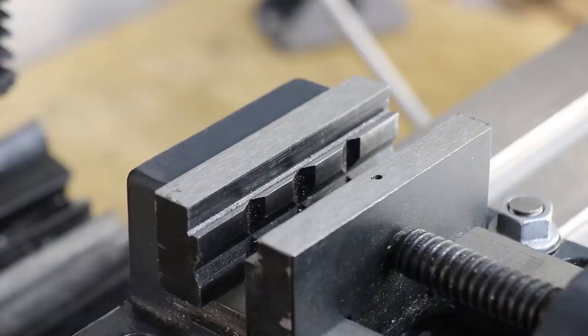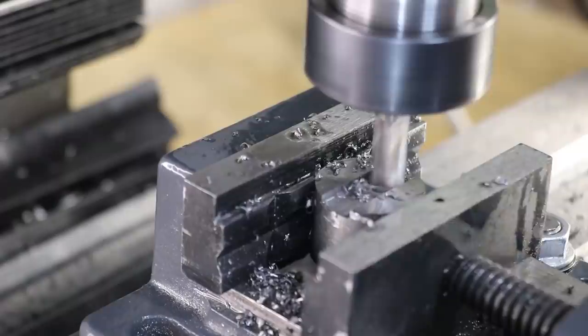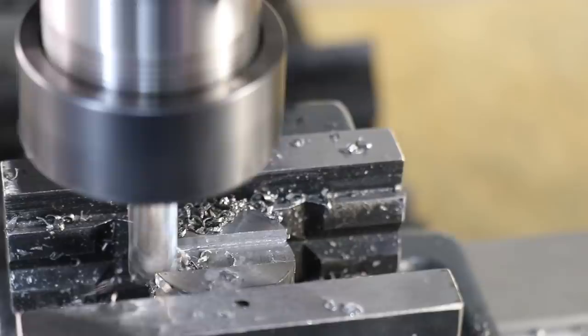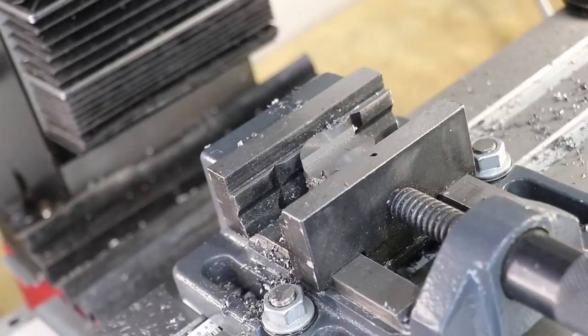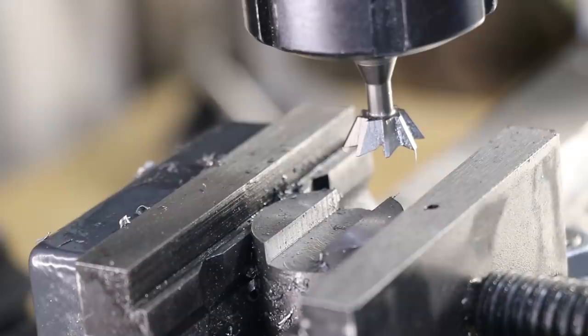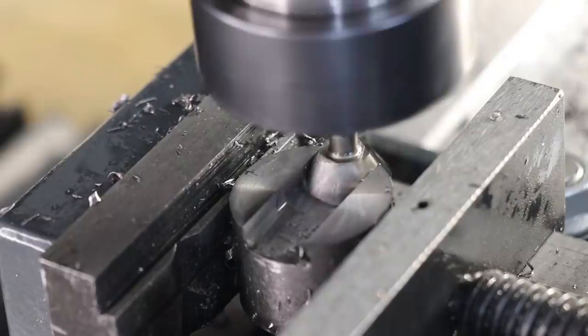So that's the 12 millimeter slot cut through the part. Now I need to go ahead and form the 60 degree dovetail feature. Unfortunately the only dovetail cutter I have on hand is a little bit oversized for the job, just a little bit too wide for the slot.